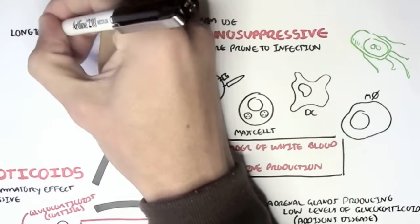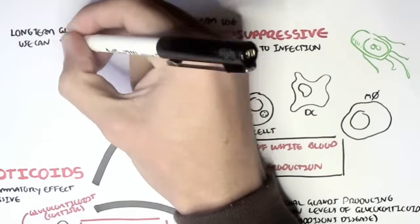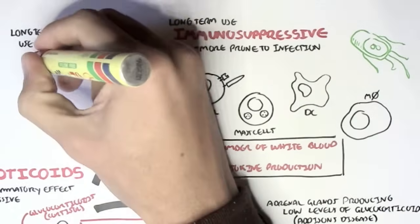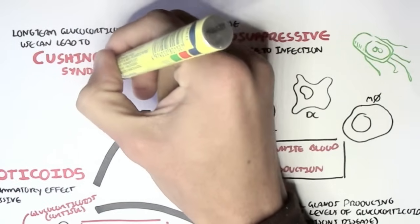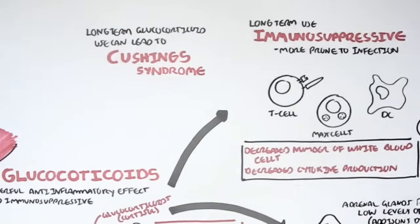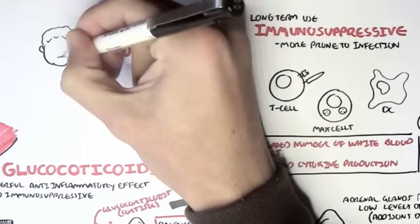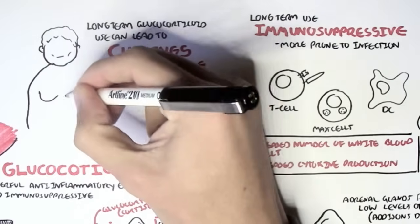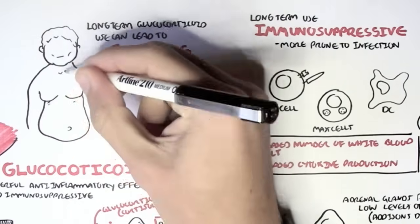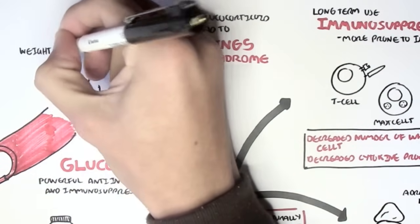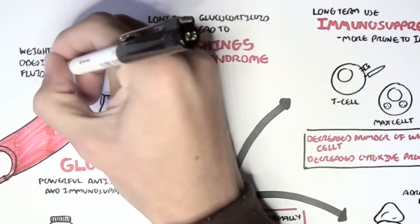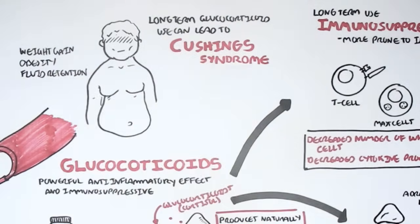Long-term use can also lead to Cushing's syndrome, which is related to Cushing's disease. However, Cushing's syndrome is unrelated to the other endocrine glands. It's just because we use too much glucocorticoids. Cushing's syndrome, a person suffering from Cushing's syndrome, we would see weight gain, obesity, and fluid retention, and so you have this sort of big gut because of the fluid retention.